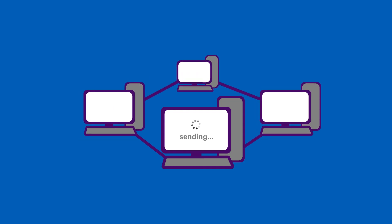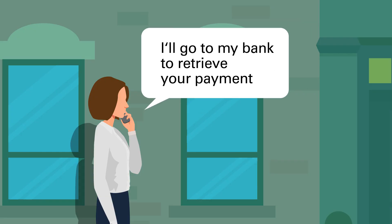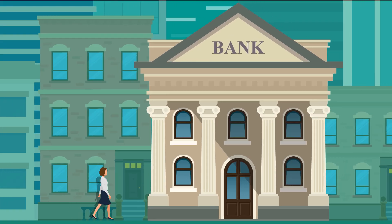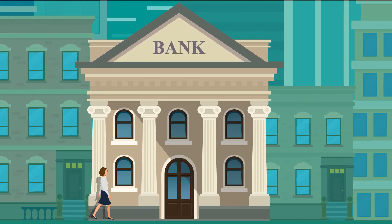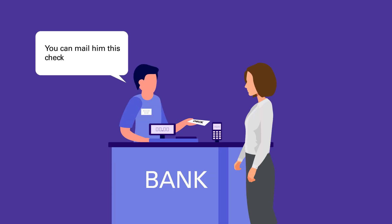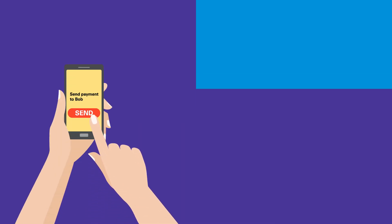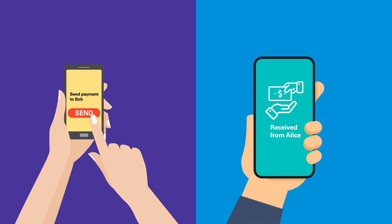With blockchain, two parties are able to make a transaction without a trusted intermediary such as a bank, broker, or clearinghouse. Let's say Alice wants to send a payment to Bob. Without blockchain, Bob and Alice use a number of intermediaries to facilitate the payment, including clearing and settlement, and to ensure that Bob does not send that same payment to someone else — known as double spending.